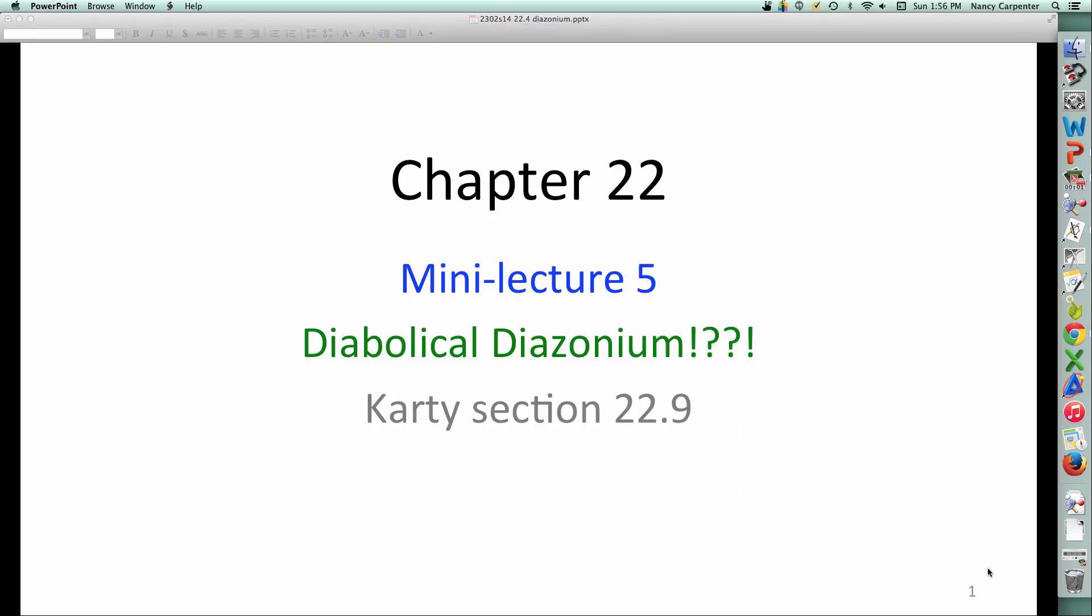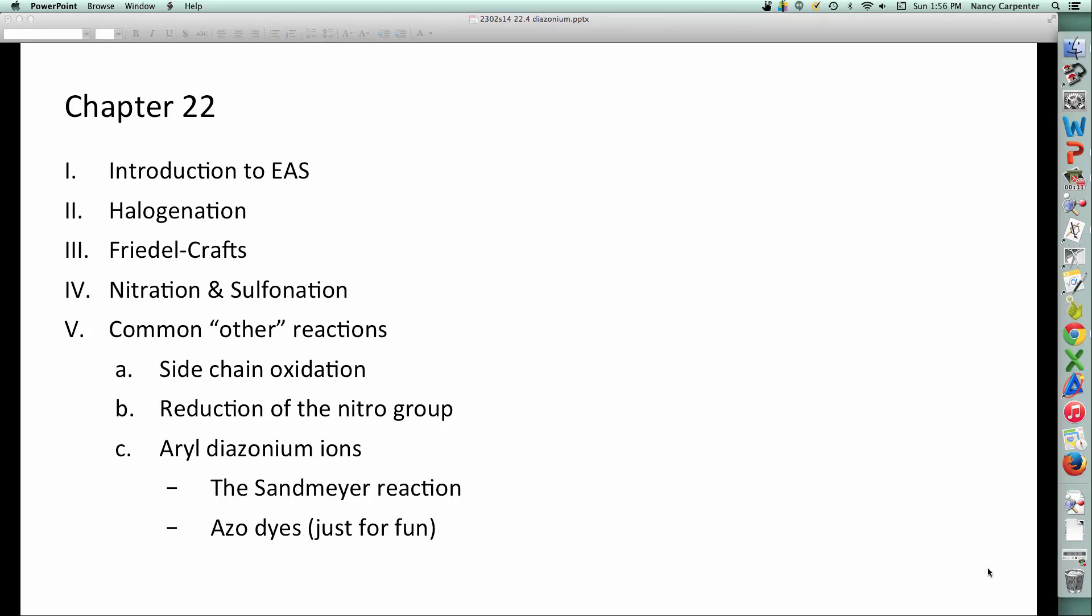And now for the colorful wrap-up to chapter 22, we will talk about very cool diazonium ions. Where are we? We've seen EAS, we've learned EAS in the addition of halogen, alkyl, nitro, and sulfonyl electrophiles. We've seen how to manipulate substituents on aromatic rings by oxidation reduction. Now we're going to learn about a new and wild and crazy kind of functional group, as yet unseen, that gives us a lot more power. That being the aryl diazonium ion.